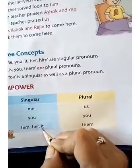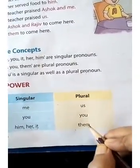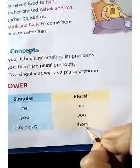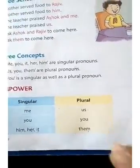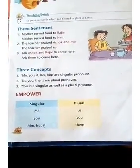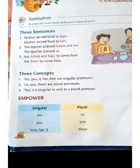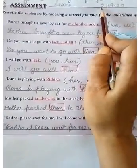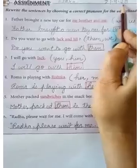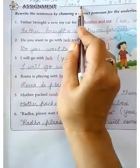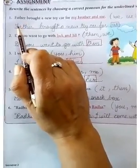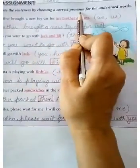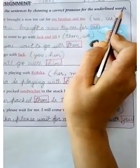Clear? In the same way, these are the plural pronouns: us, you, them. Now let us do the assignment on page number 51, which will give you a better idea about all these pronouns and how they are used. Let's put today's date: 21, 9, 20. What you have to do in this assignment: rewrite the sentences by choosing a correct pronoun for the underlined words. The underlined words should be replaced by the pronouns given in the bracket. You have to choose one pronoun out of the two given pronouns.